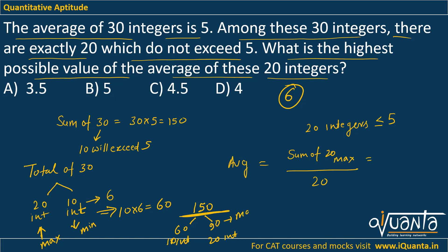So 90 will be the maximum sum of those 20 integers which do not exceed 5. So what will be the highest average? Maximum sum upon 20, which gives us 4.5. So option C will be the correct answer here.